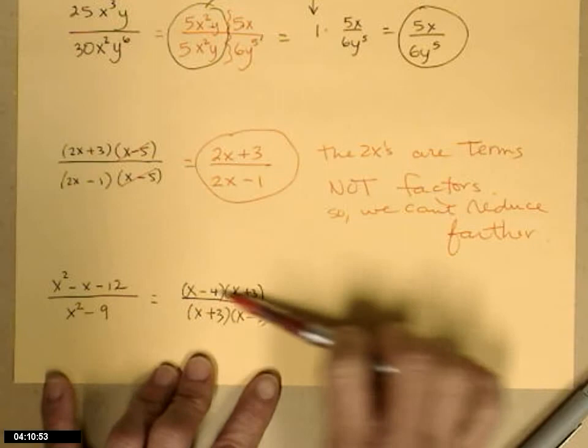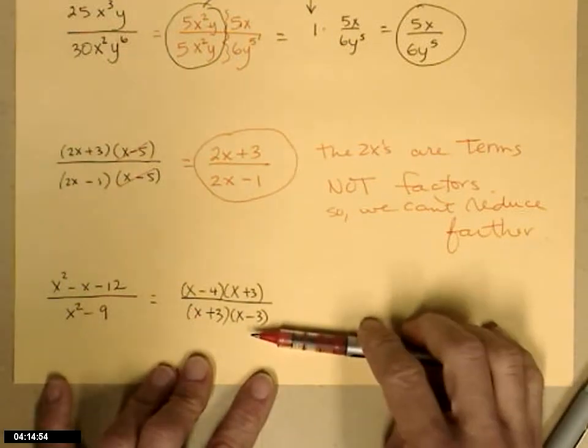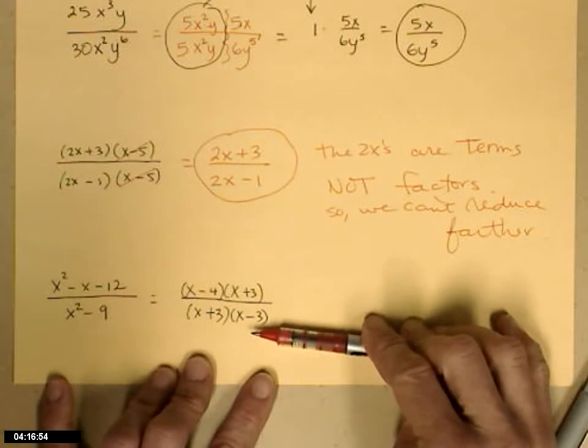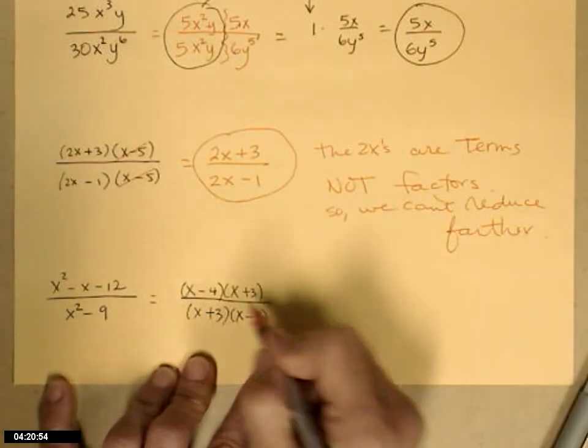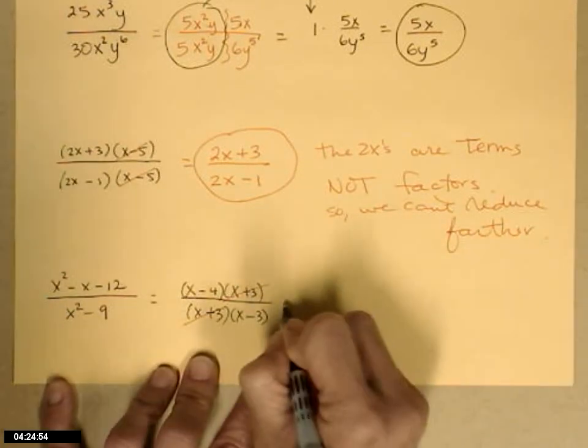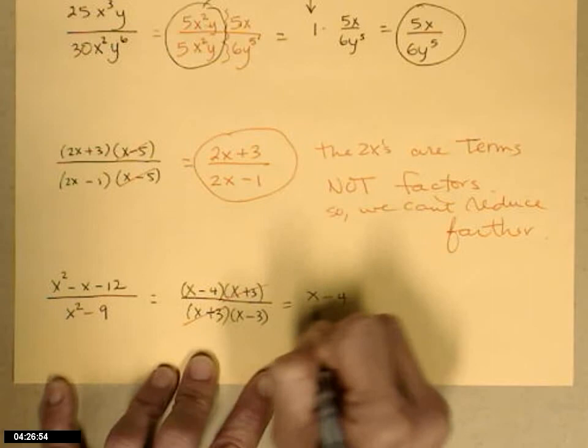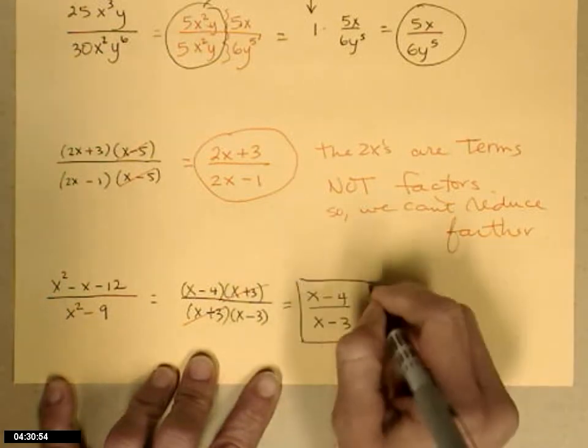And now, everybody in the top is wrapped up in a multiplication problem, same thing with the bottom, we're written in factored form. I can look for common factors, x plus 3 in the top, x plus 3 in the bottom. When they're common, they have to be exactly the same. x minus 4 is left in the top, x minus 3 is left in the bottom.